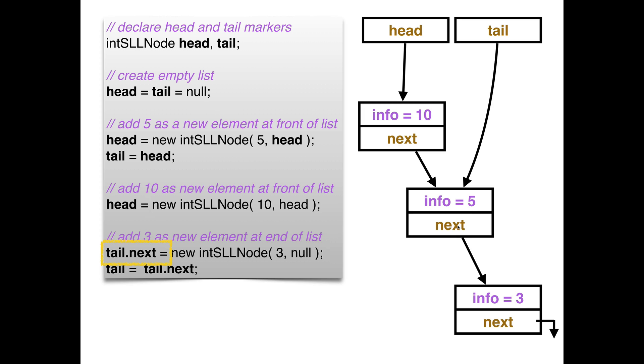So tail.next equals new, tail.next is that reference to this. And now all I need to do is make tail point to the new element. That's what I'm doing here. Tail equals tail.next. Tail was pointing here. Tail's next was pointing there. So therefore, tail equals tail.next, make tail point to the new element.